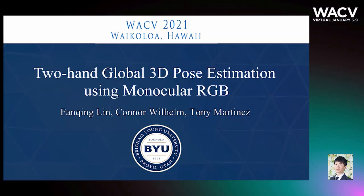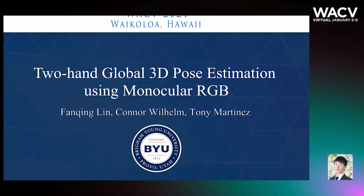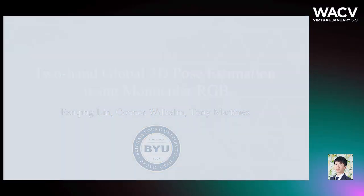There have been previous successes in estimating the canonical pose of a single hand using a single monocular RGB image. This is the first program to our knowledge to estimate global poses for both hands. As we are the first to attempt this, there were no existing datasets available for this task, so we created our own synthetic dataset.